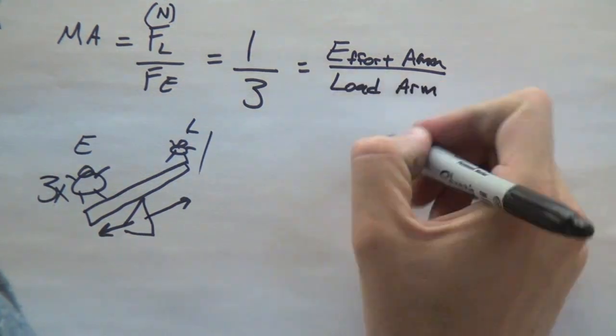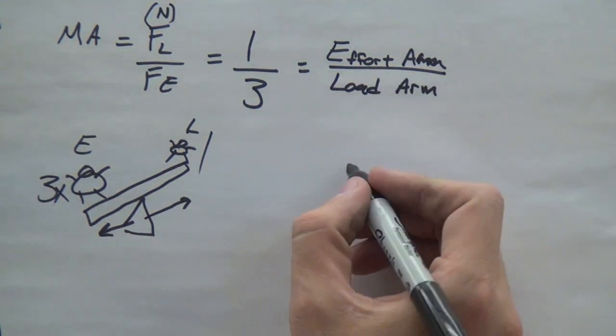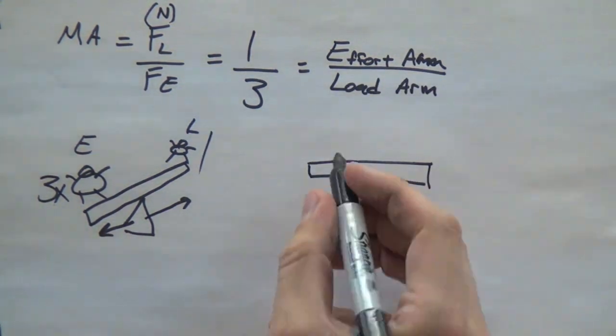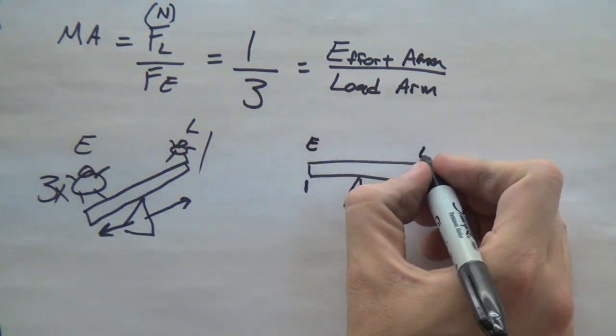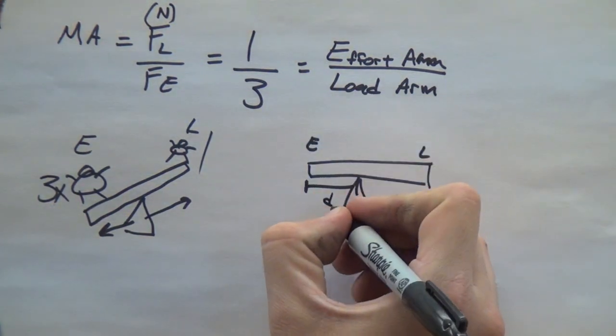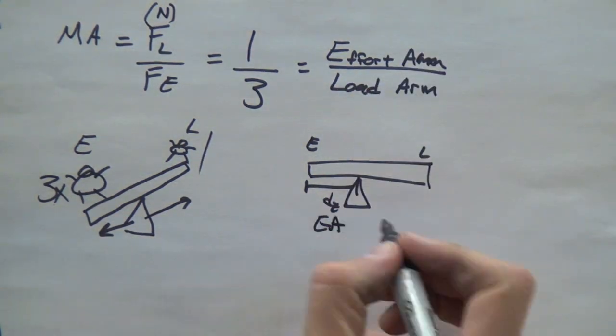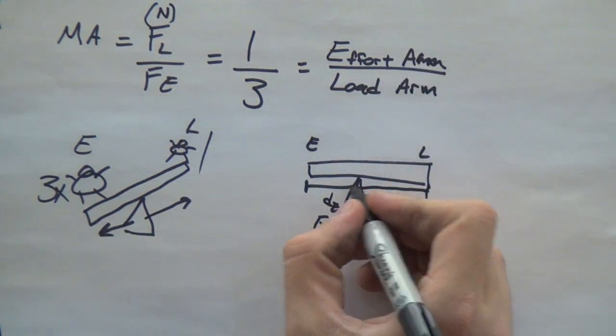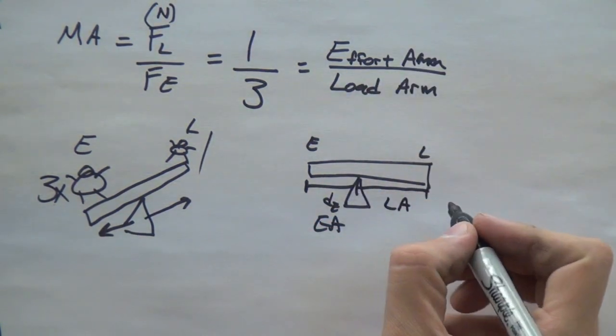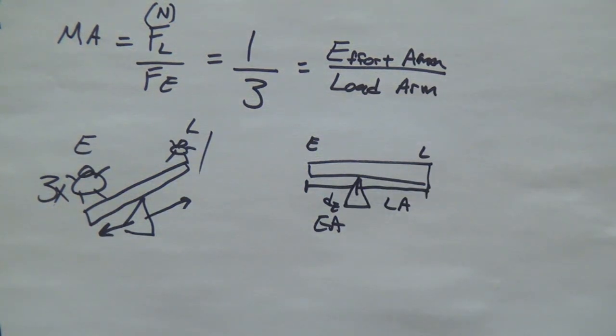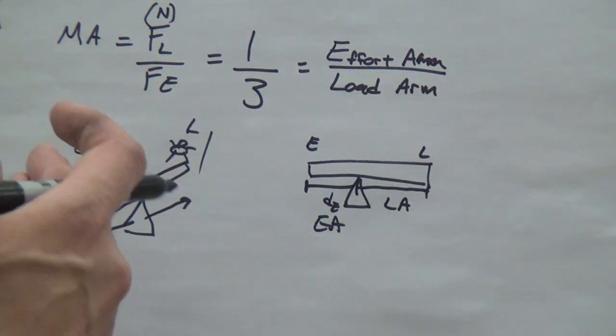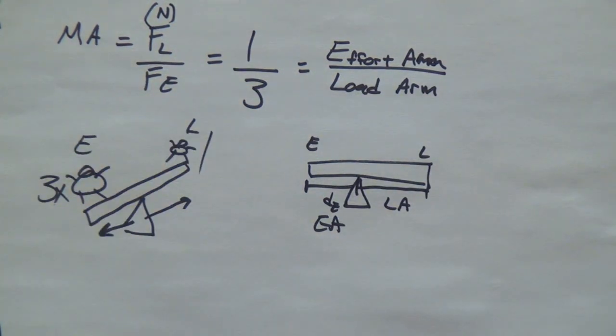But this also equals or is proportionate to the distance or the effort arm over the load arm. Now, the effort arm, when we have this, let me redraw this. Here's our effort, here's our load. The distance between the effort and the fulcrum is the effort arm. The distance between the load and the fulcrum is called the load arm. So, when we move that fulcrum from side to side, it changes our mechanical advantage.